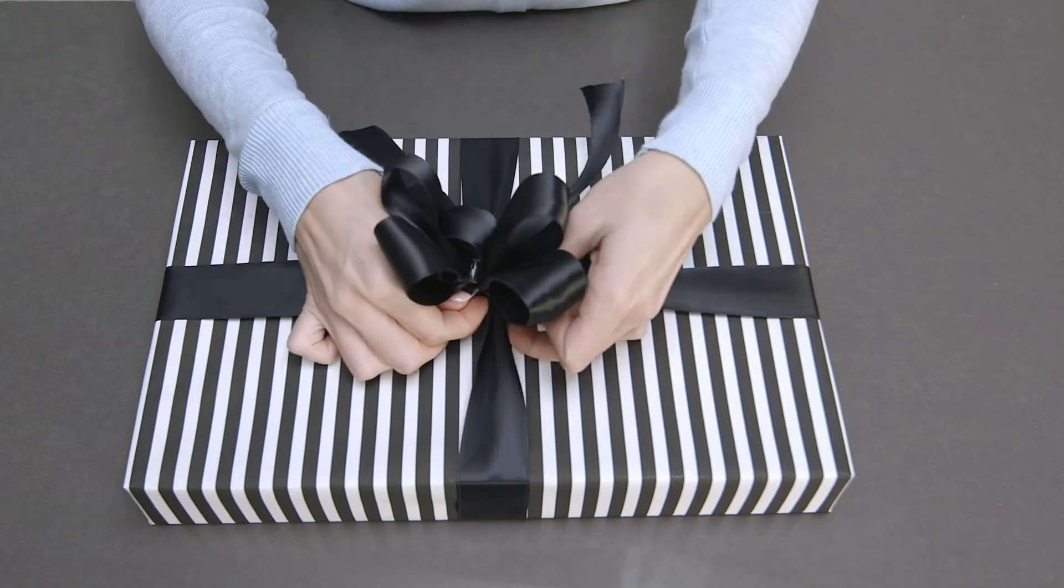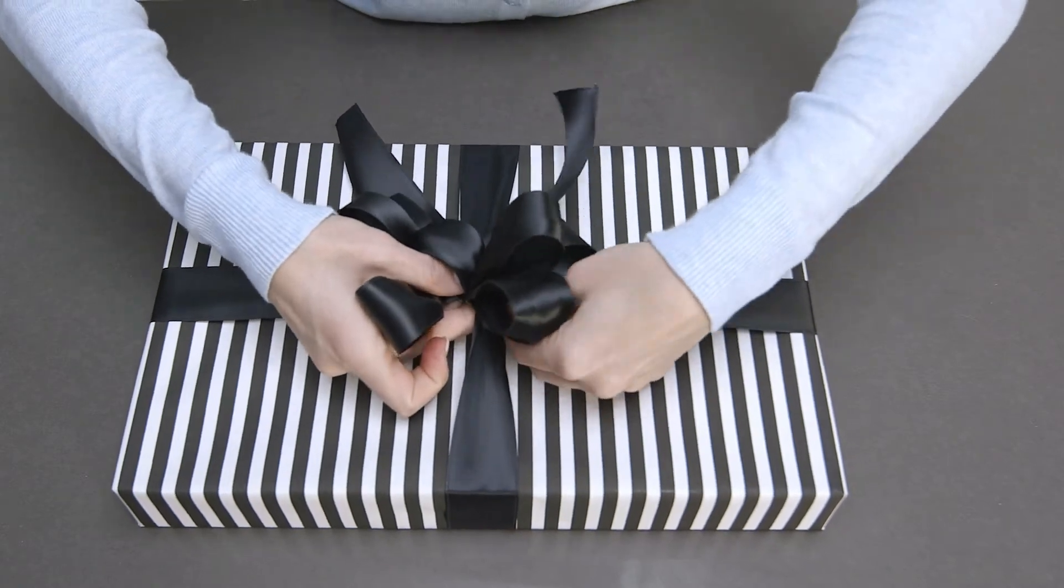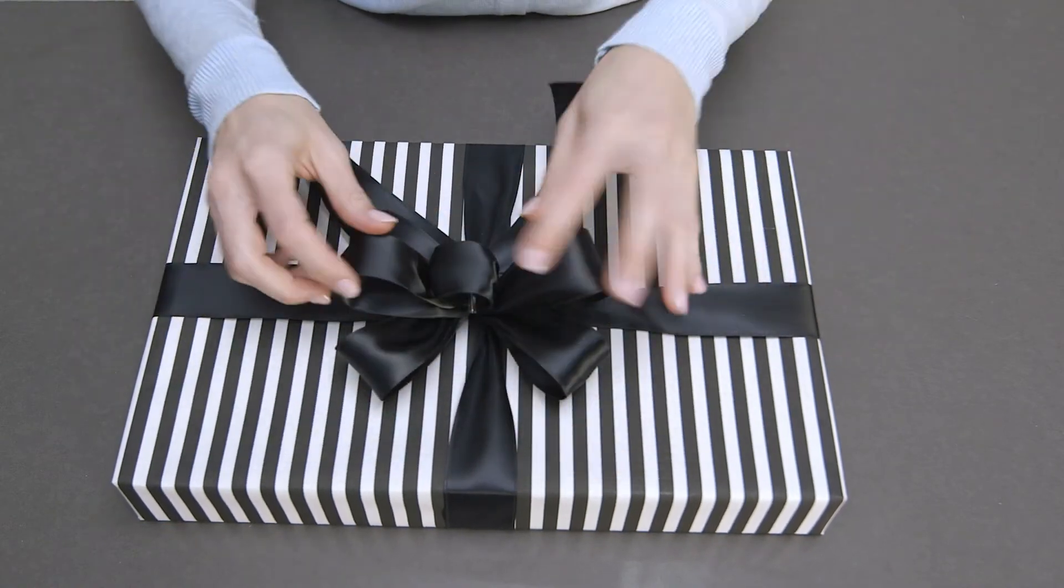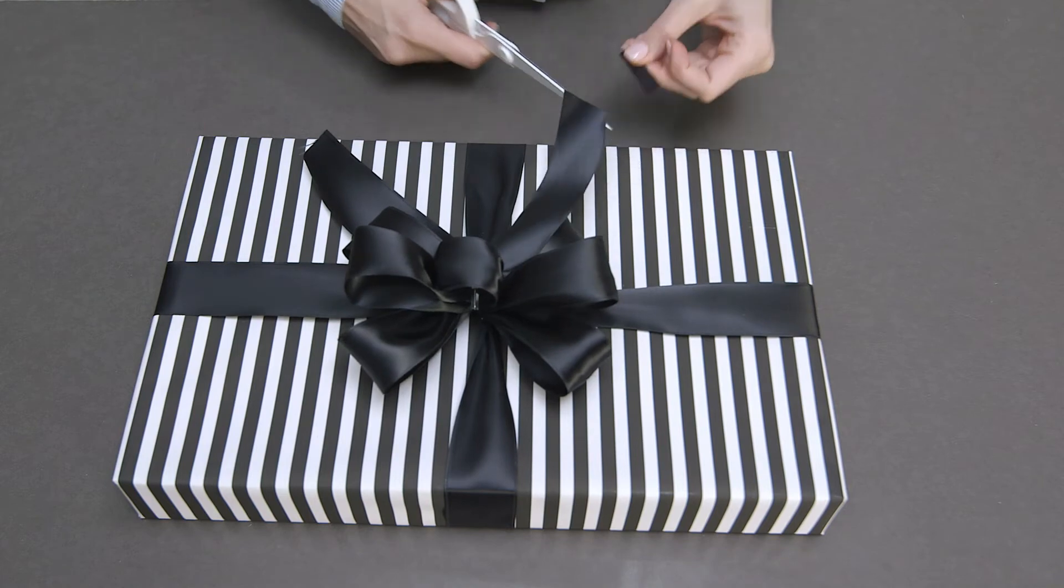Attach the finished bow to your package with the ribbon wire. After the bow is secured, you can make the finishing touches by arranging the loops as desired. Lastly, trim the tails of your bow.